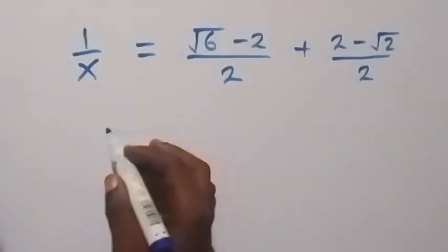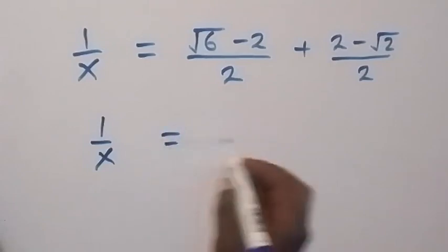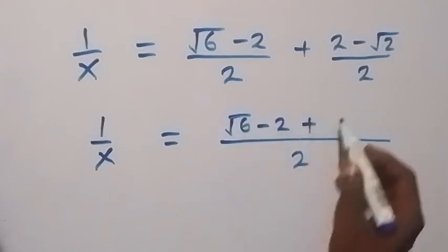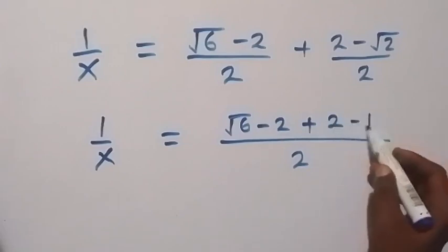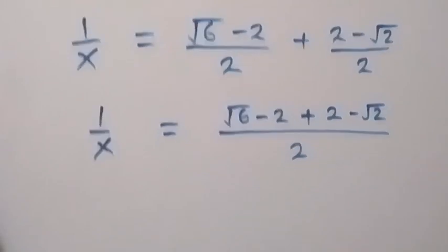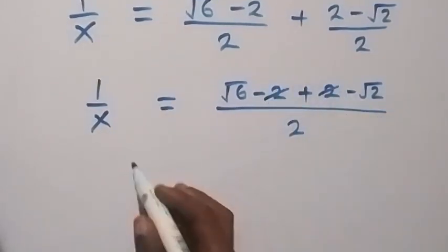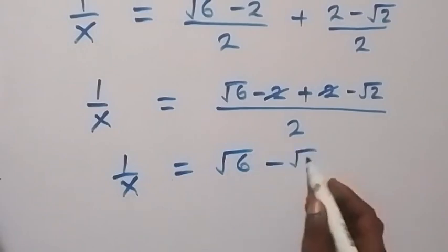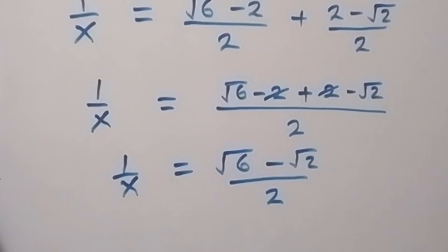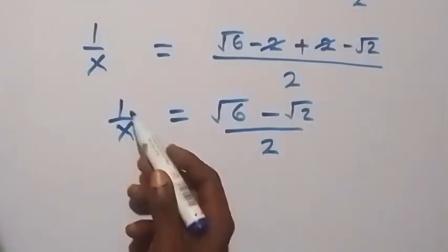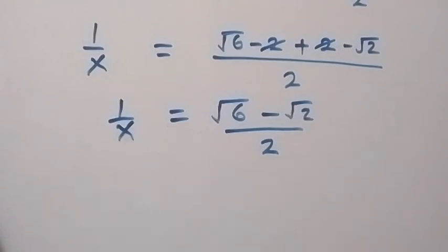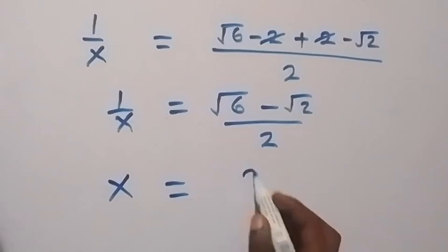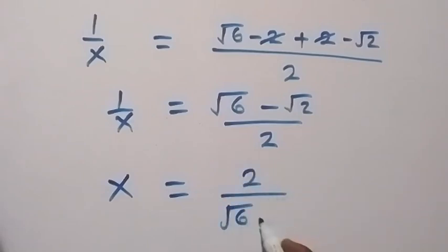Both denominators are 2, so 1/x equals (root 6 minus 2)/(2) plus (2 minus root 2)/(2). Combining over the same denominator: the minus 2 and plus 2 cancel out, leaving 1/x equals (root 6 minus root 2) over 2. Now take the reciprocal on both sides to find x, giving x equals 2 over (root 6 minus root 2).